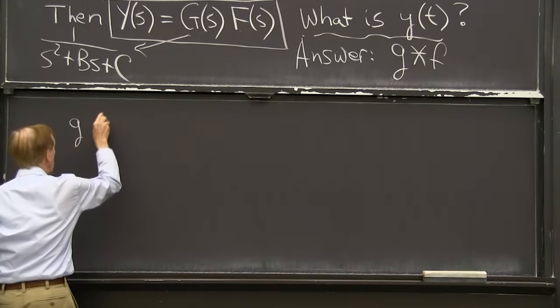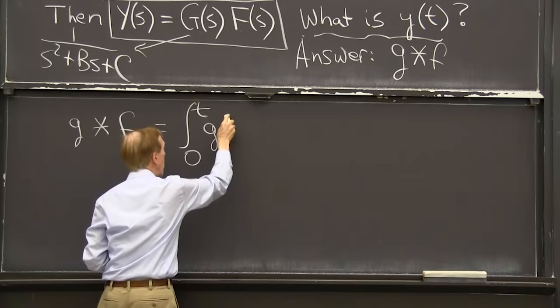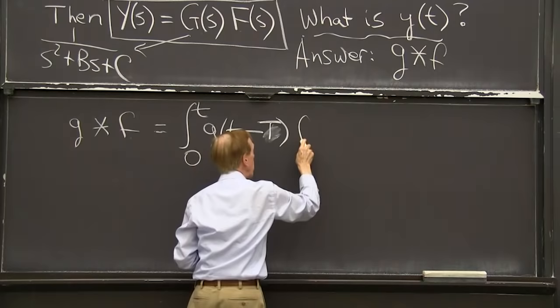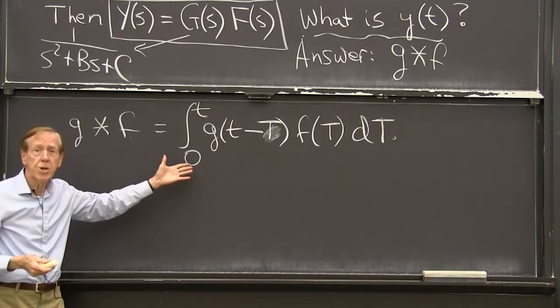And let me tell you what convolution is. So convolution is, here is the formula for convolution. It's an integral from 0 to t of one function, maybe I better use capital T, better, times the other function integrated. That's what convolution is.